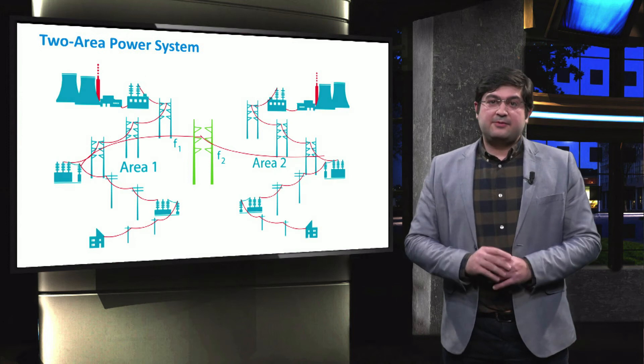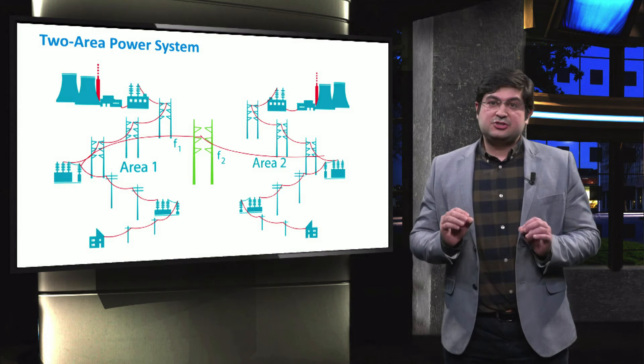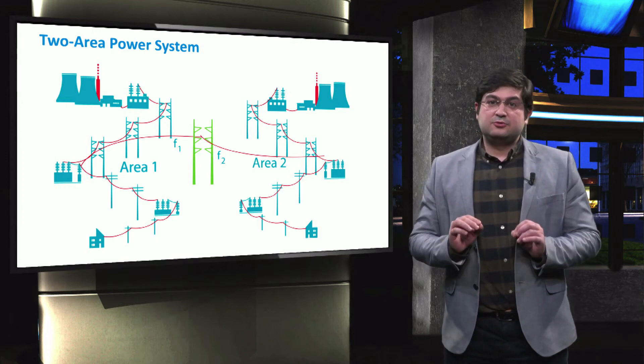In a two-area power system, the secondary control adjusts the active power which is shared between the interconnected areas according to their scheduled power set points.